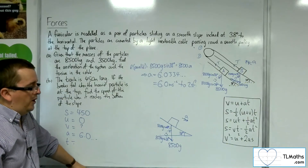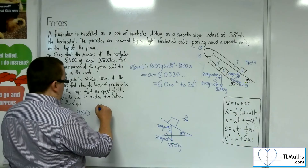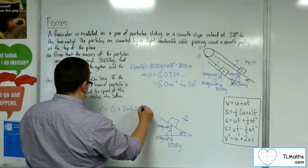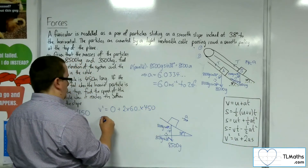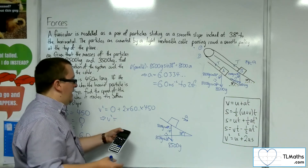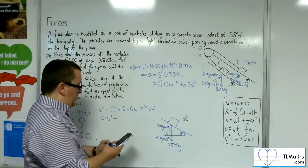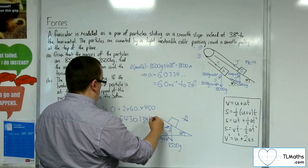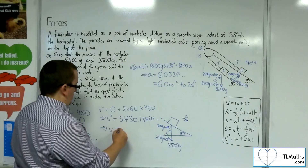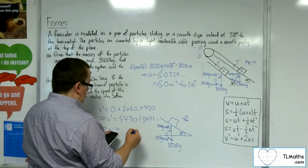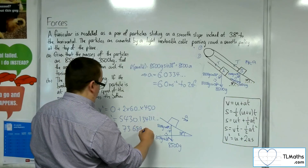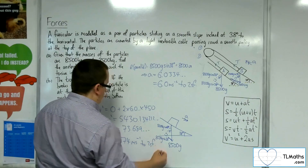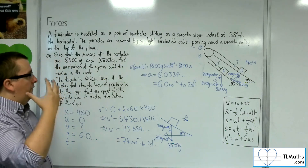Using the SUVAT equation that doesn't involve time: v² = u² + 2as. With u = 0, a = 6.033, and s = 450: v² = 2 × 6.033 × 450 = 5,430.13. Taking the square root gives v = 73.7, so 74 metres per second to two significant figures. And that's how we deal with this problem.